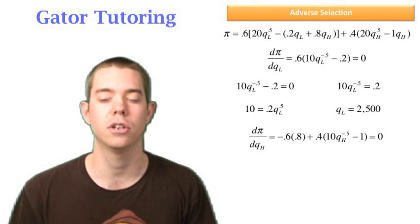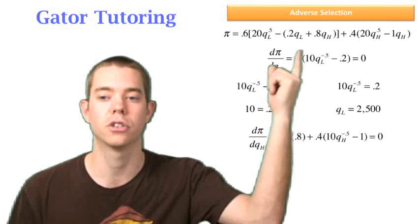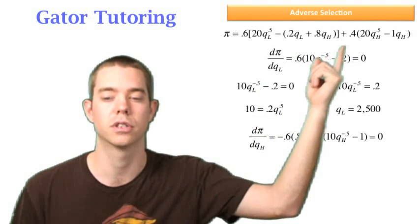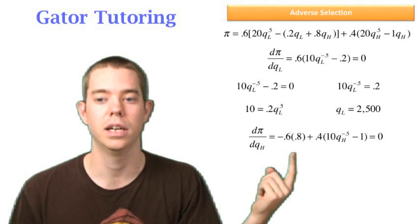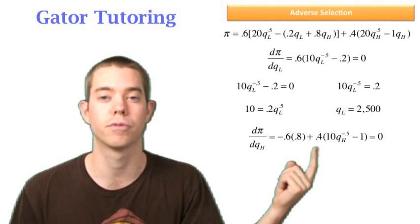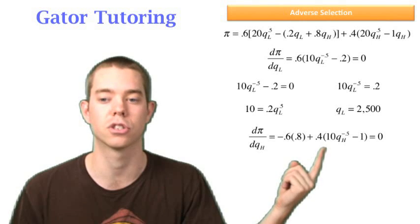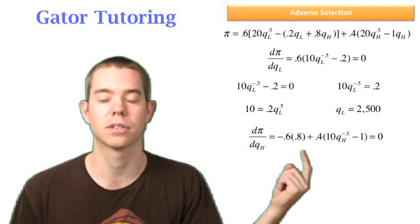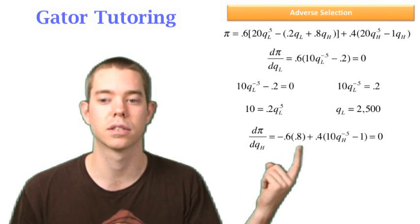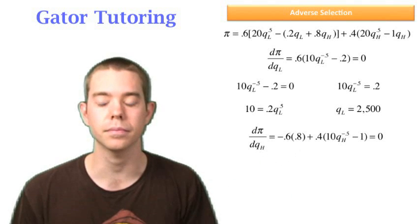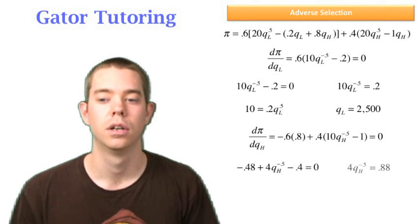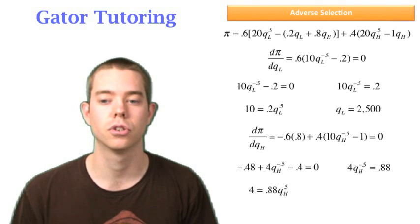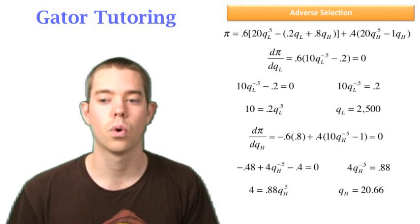Taking the derivative with respect to QH, well now we have to be careful we have a QH in the first part as well as the QHs in the second part. So the distributing through the 0.6 is going to be important and keeping the 0.4 is also going to be important because we can't just divide through to both sides like we did last time because of that 0.6 times the 0.8. And now we can combine like terms and solve. And in this case we find QH to be equal to 20.66.